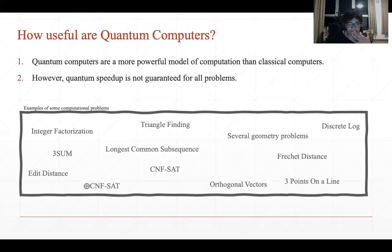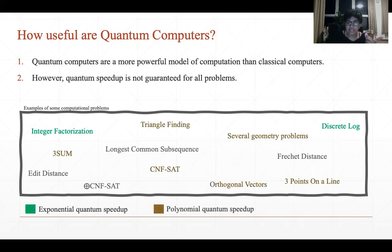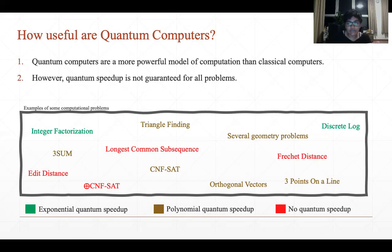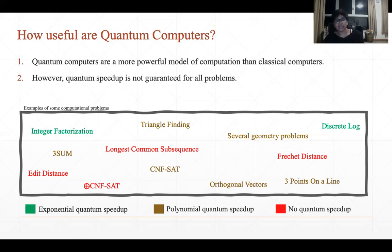Let's look at some examples. For problems like integer factorization and discrete log, we have quantum algorithms that are exponentially faster than classical ones. But for problems like triangle finding, orthogonal vectors, 3SUM, and CNF-SAT, the quantum speedup is only polynomial. And surprisingly, for problems like longest common subsequence, edit distance, and Fréchet distance, the current quantum algorithms are as bad as the classical ones. So it would be nice to know for which problems we have a quantum speedup, and if so, how much.